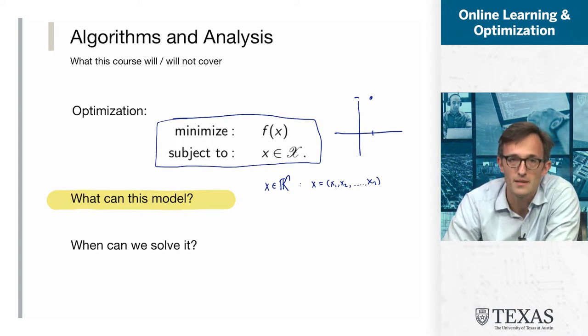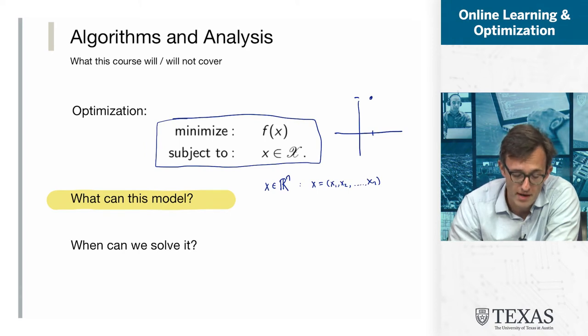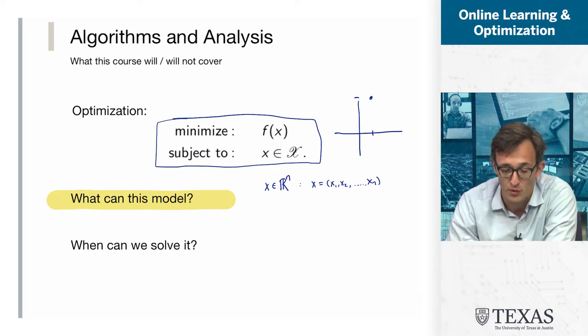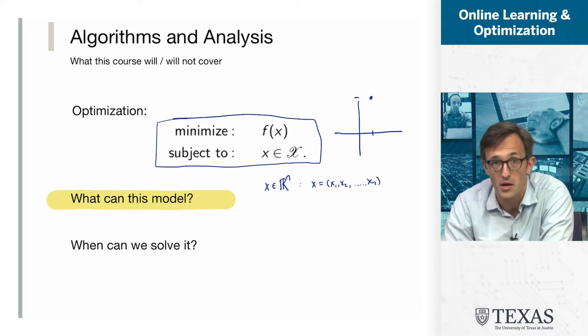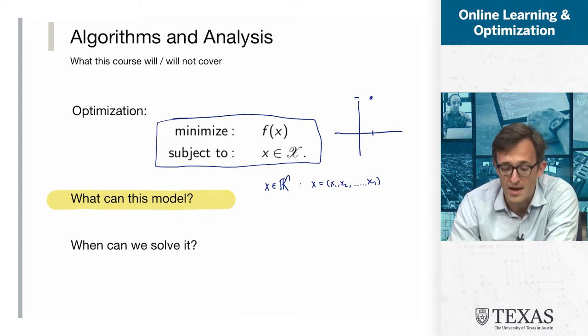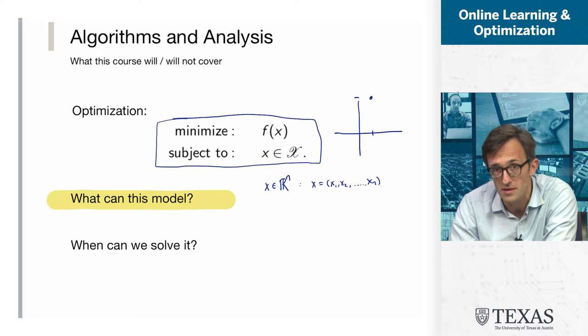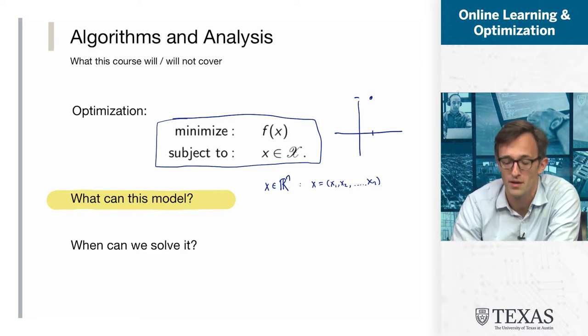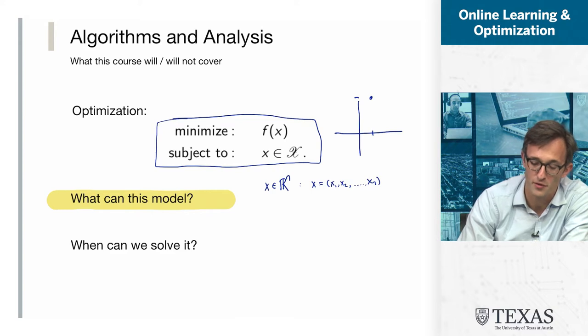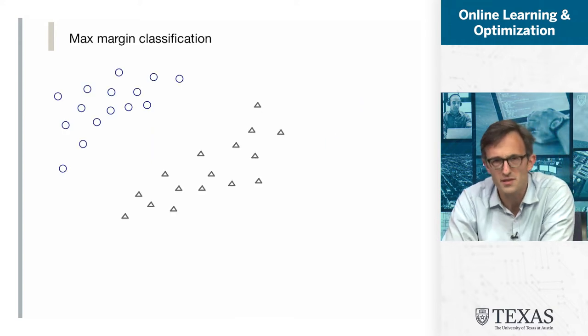So I want to understand this simple thing, these simple two lines here: what can they model? And then of course we have to ask the companion question of when can we solve such a thing? What restrictions do we need on f and what restrictions do we need on X? And hopefully there'll be some good intersection between f and X that can model interesting problems and f and X that we can solve very efficiently and effectively with reliable algorithms.